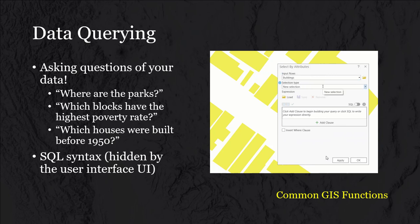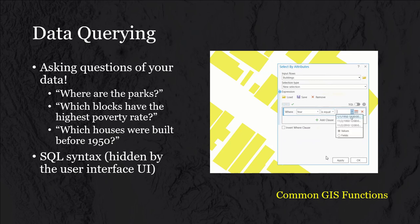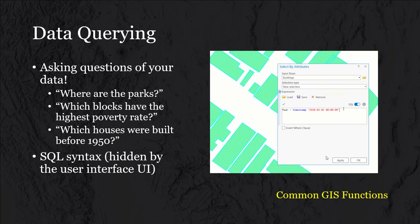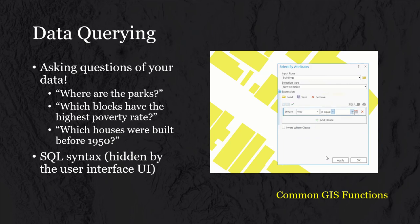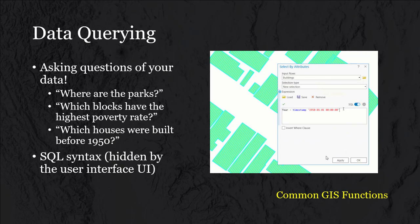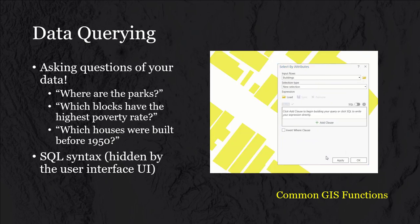Data querying: a GIS provides the ability to visualize information, but really the crux of GIS is about asking questions of your data. Examples include: where are the parks? Which blocks have the highest poverty rates? Which houses were built before 1950? In the video we see how a user uses the GIS to ask this kind of question using the select by attributes tool — looking at buildings data, making a new selection, adding a clause where the year attribute equals 1950, then hitting apply. All data that meets that query is selected. Behind the scenes, what a user is building is actually a SQL query, showing the year equals a specific timestamp.